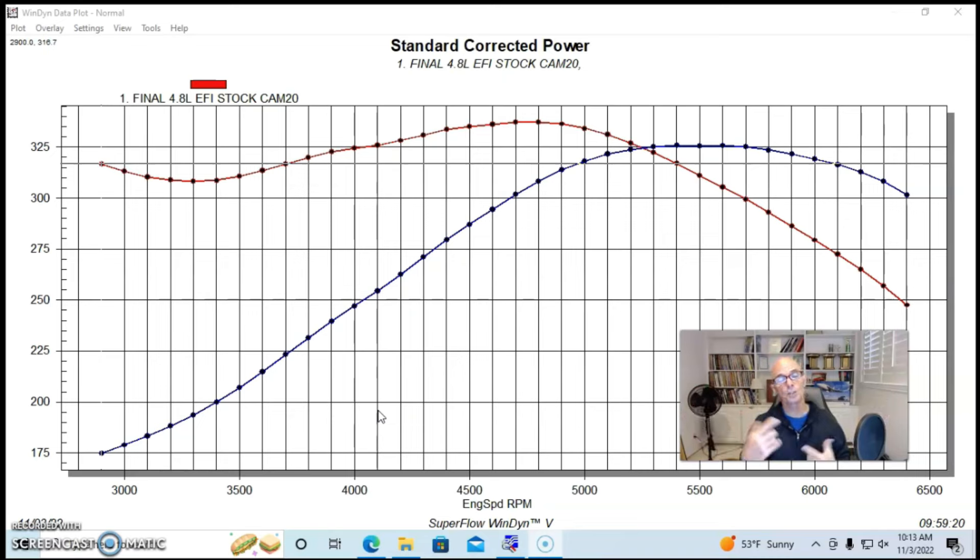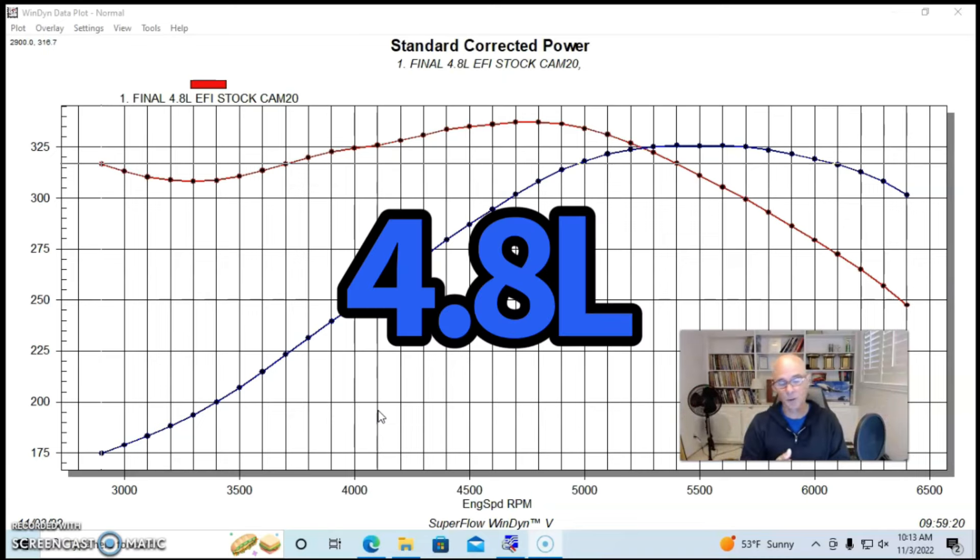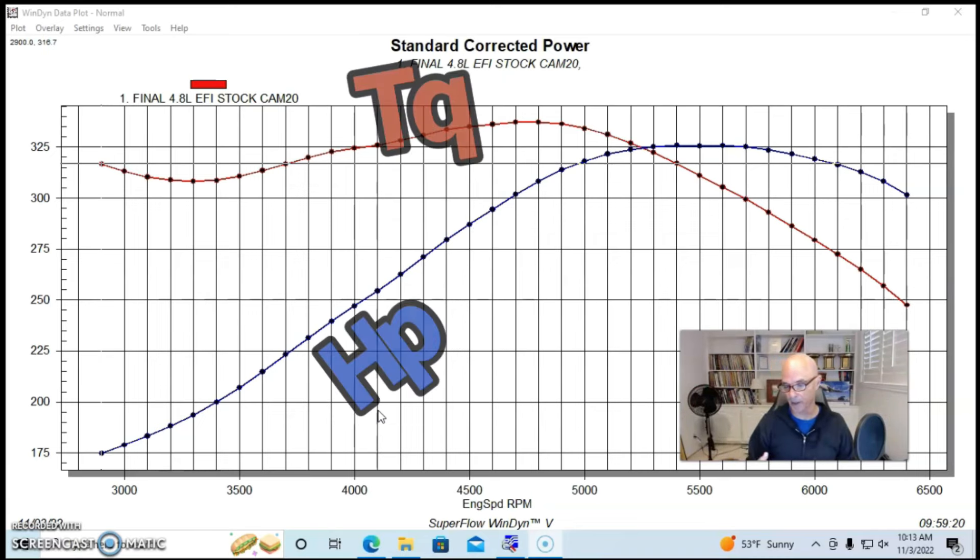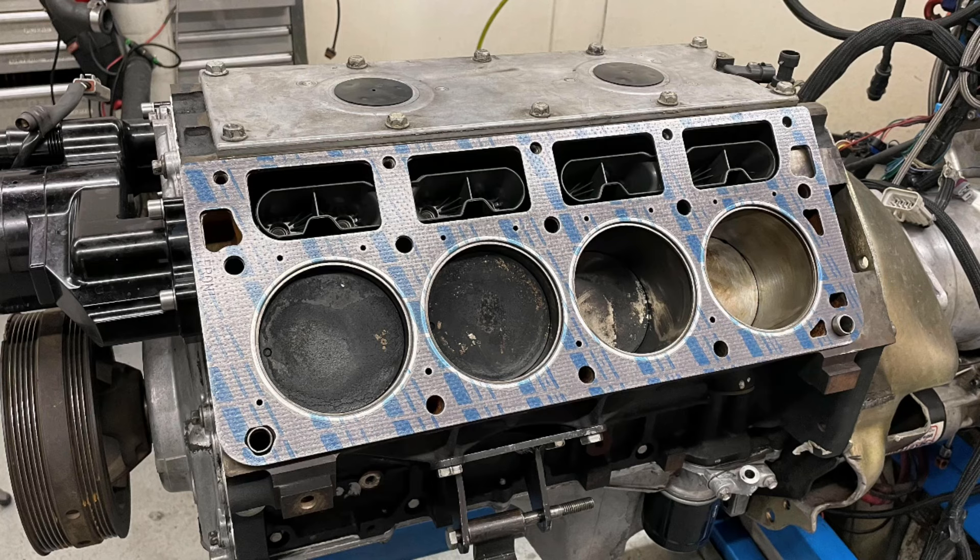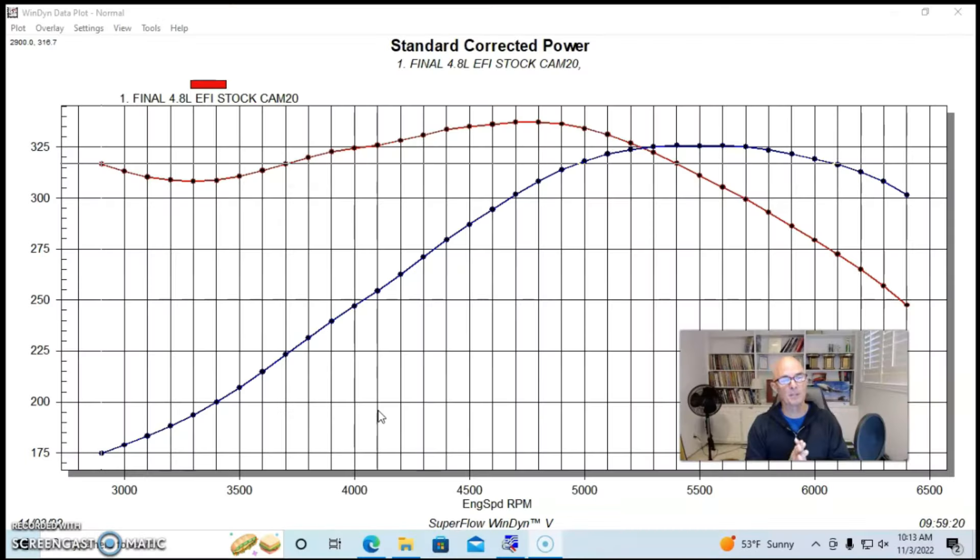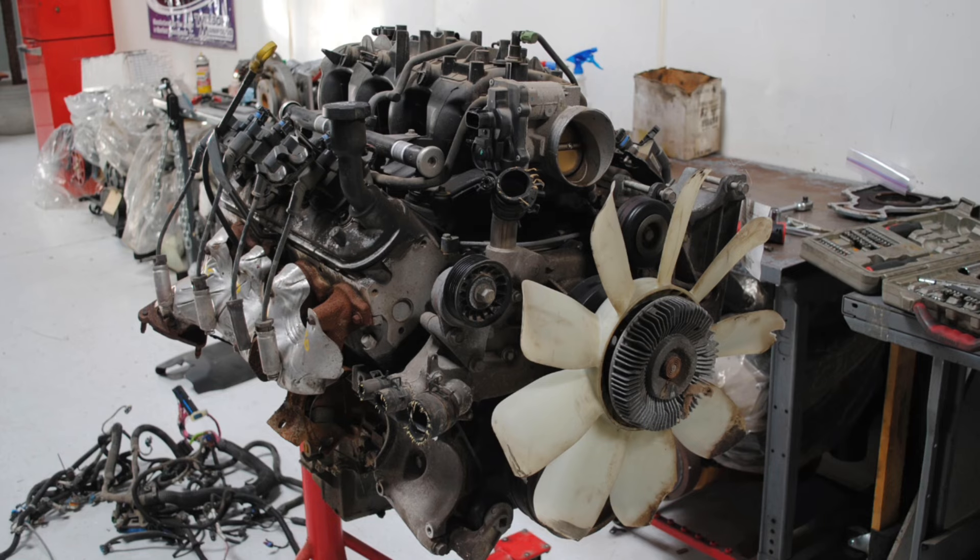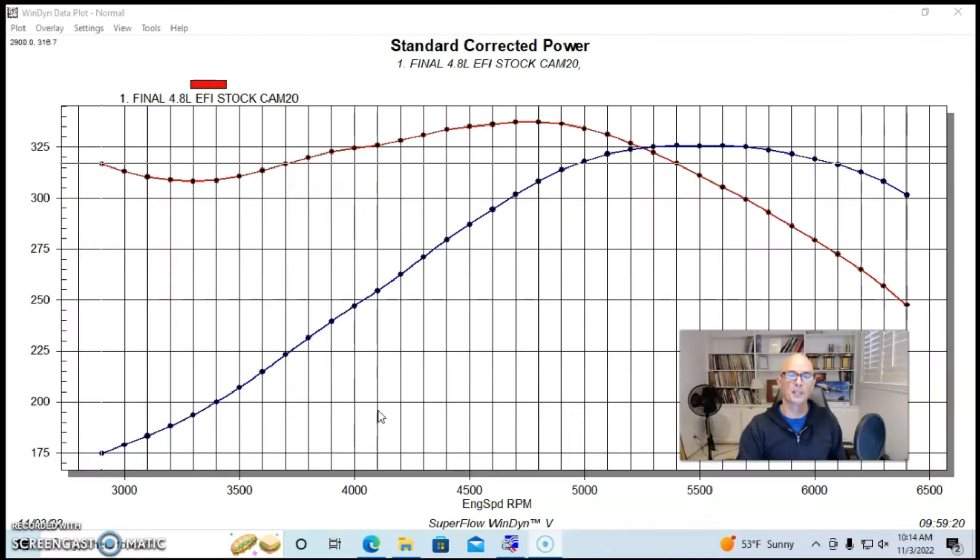We'll start off with our 4.8 liter. This was a junkyard 4.8 that I put together and it was less than ideal when I first got it, but we managed to put everything together and fix all of the problems. And this is pretty indicative of what you'll find with the 4.8 liter. It's a little bit on the soft side of the power curve of a lot of the 4.8s from the wrecking yard that I've tested.